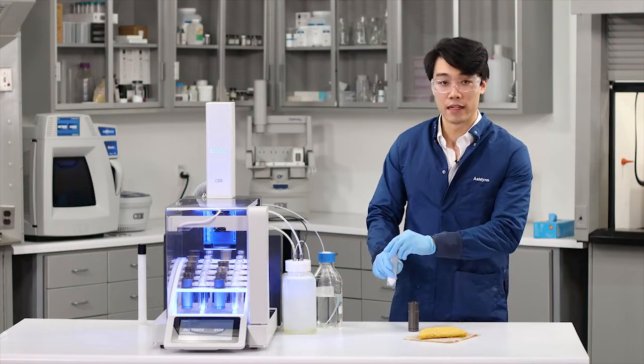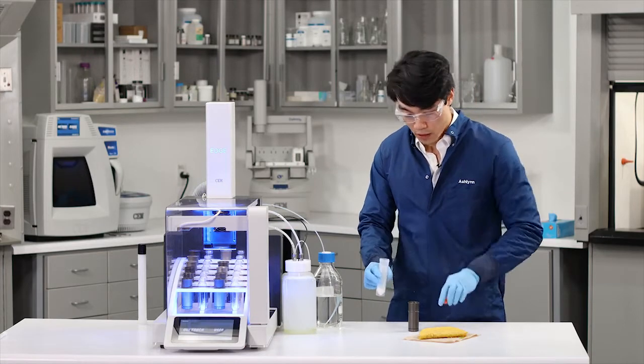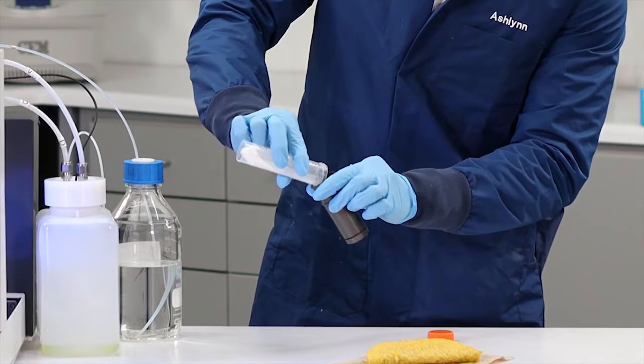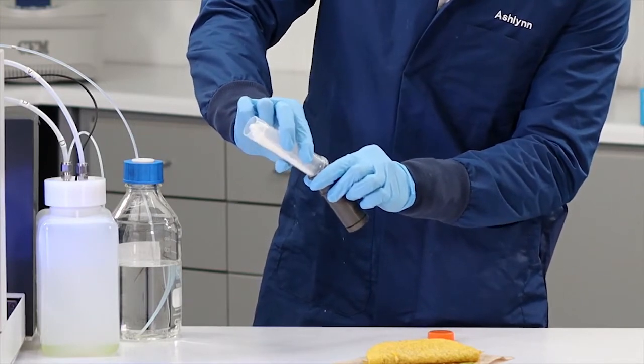First thing I'm going to do: take a little bit of the absorbent that we're going to need, weigh it directly into this Q cup that we have pre-assembled with the Q disc.